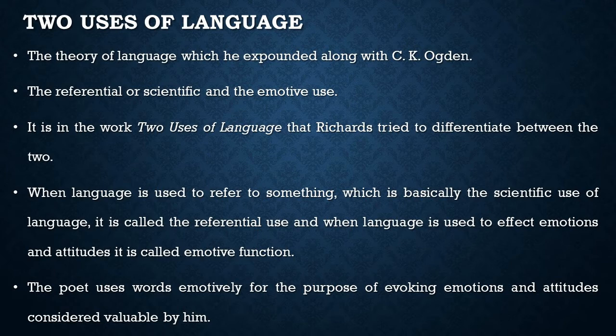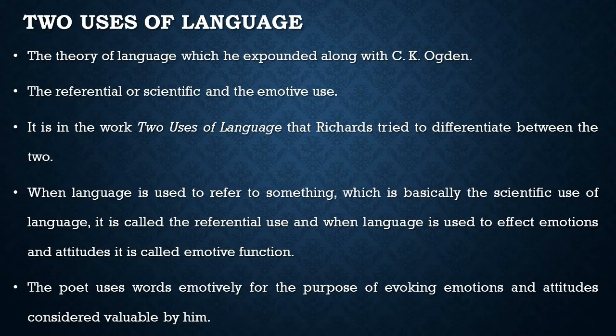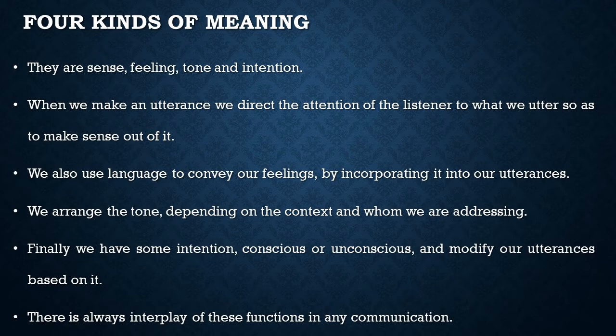The poet uses words emotively for the purpose of evoking emotions and attitudes considered valuable by him. Now we should also try to understand the four kinds of meaning that he proposed. These four aspects of meaning are sense, feeling, tone, and intention. When we make an utterance, we direct the attention of the listener to what we utter so as to make sense out of it. We also use language to convey our feelings. We arrange the tone depending on the context and whom we are addressing. Finally, we have some intention — conscious or unconscious — and modify our utterances based on it. There is always an interplay of these functions in any communication, according to Richards.